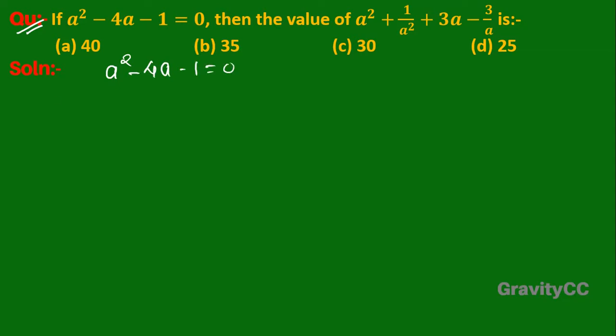From a² - 4a - 1 = 0, we rearrange to get a² - 1 = 4a.